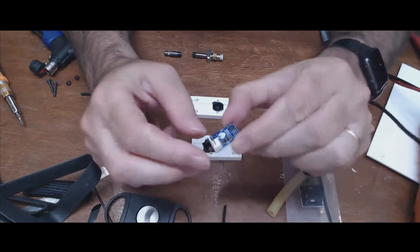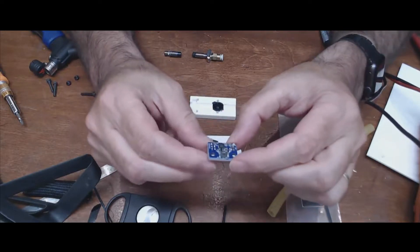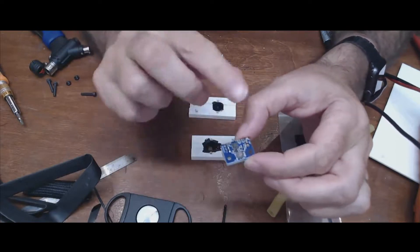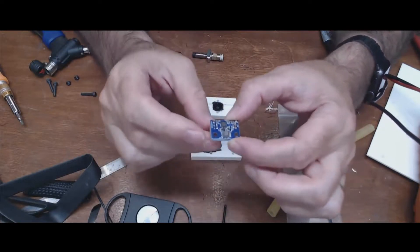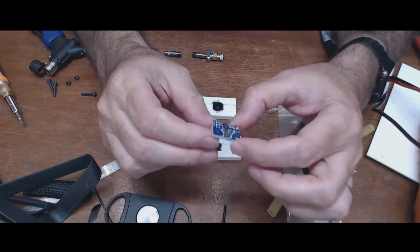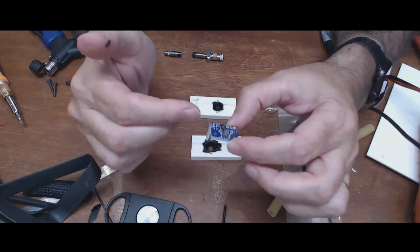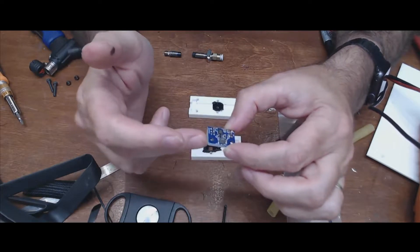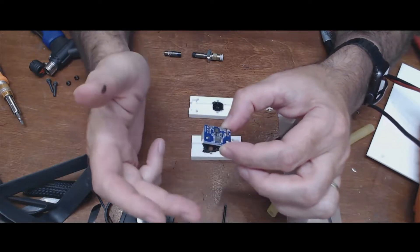When you buy the component, it actually comes with STLs for a case. But it's a small case with a very limited opening for filament to go through. And the problem with that is that once it's triggered, the filament sits between the sensor and the extruder.